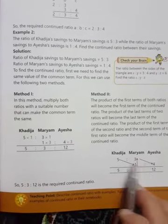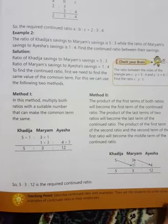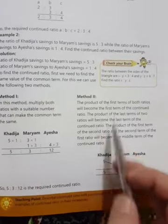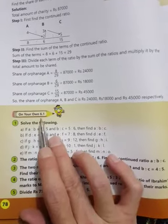Let's look at exercise 6.1, question one about continued ratio.